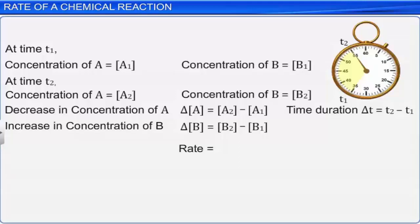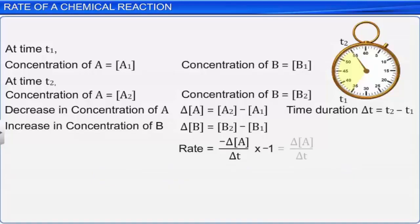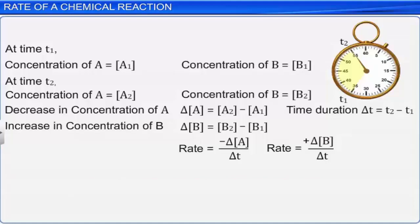Using the definition of rate of chemical reaction, we get the rate of the given reaction as a decrease in the concentration of A: minus delta A divided by time interval delta T. Delta A is a negative quantity since the concentration is decreasing with time, so we multiply it by minus 1 to make it a positive quantity, as the rate of a chemical reaction is always positive. Similarly, the rate is also given by the increase in the concentration of product B, delta B, divided by time interval delta T. Delta B is a positive quantity since the concentration of products always increases with time, hence we do not multiply the rate of reaction by a minus sign.